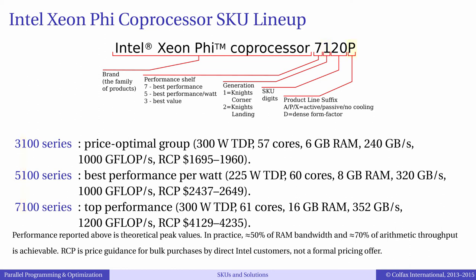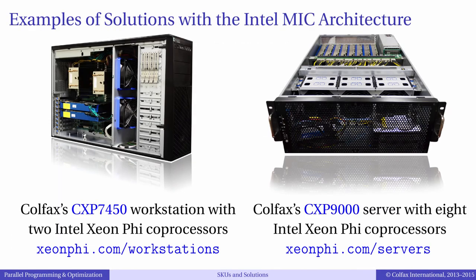Finally, the letter after the four numbers indicates the cooling solution. Most users will need either a passive cooling solution, indicated by the letter P, or an active cooling solution with an onboard fan, indicated by the letter A. The passive solution is only for servers, while the active solution may be used in workstations.